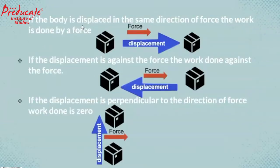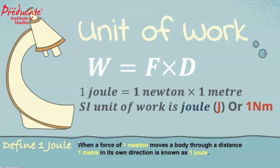If the body is displaced in the same direction of force, work is done by the force. If the displacement is against the force, work is done against the force. If the displacement is perpendicular to the direction of force, work done is zero. Now, how will you define 1 joule? When a force of 1 newton moves a body through a distance of 1 meter in its own direction, that is known as 1 joule.